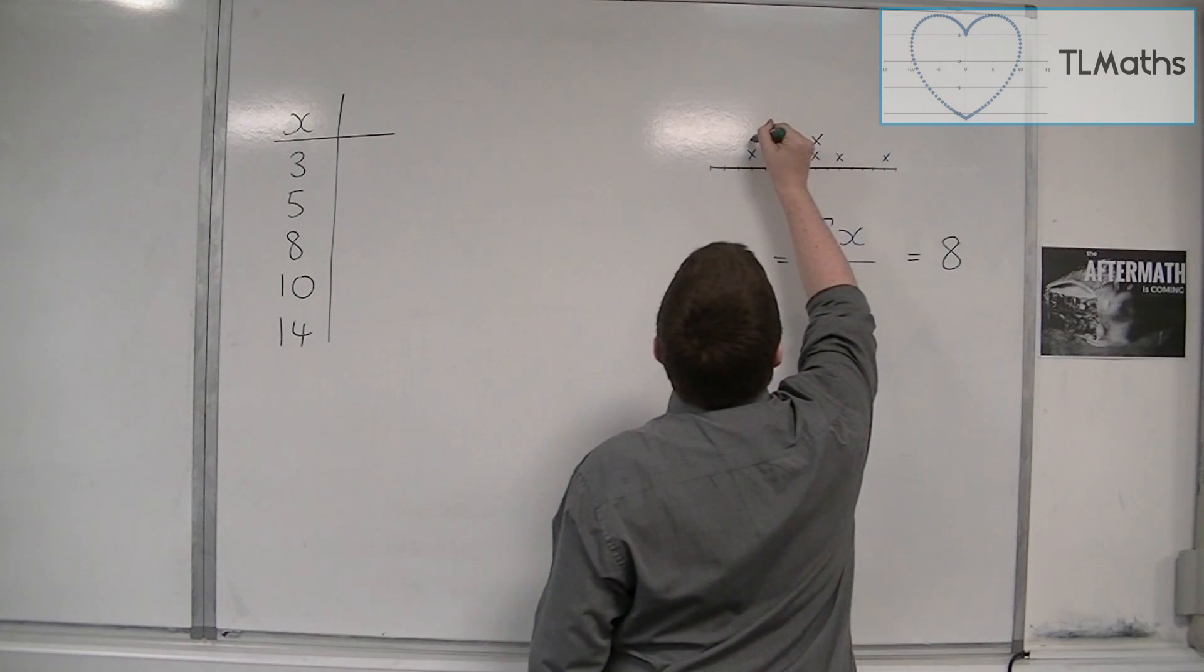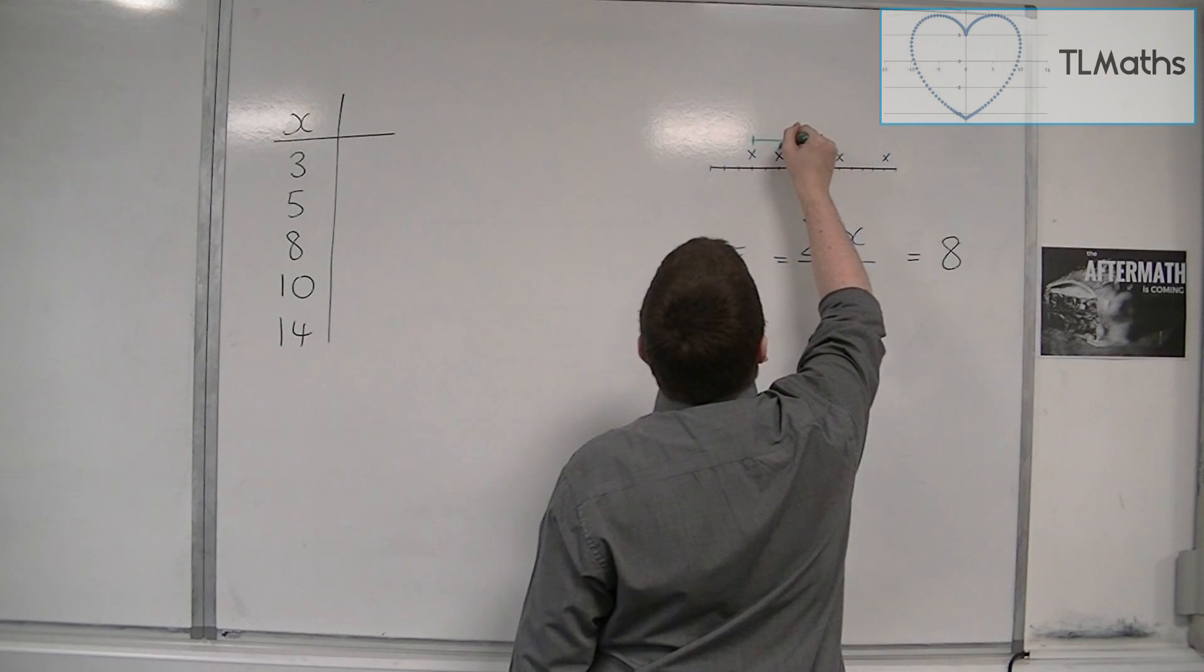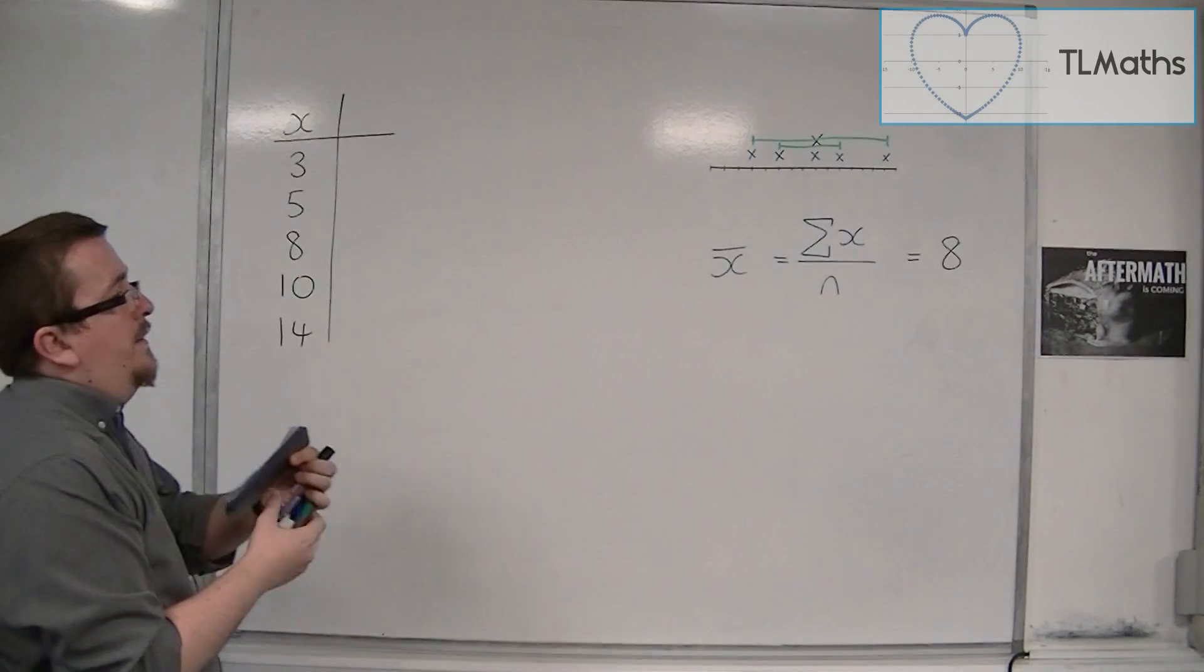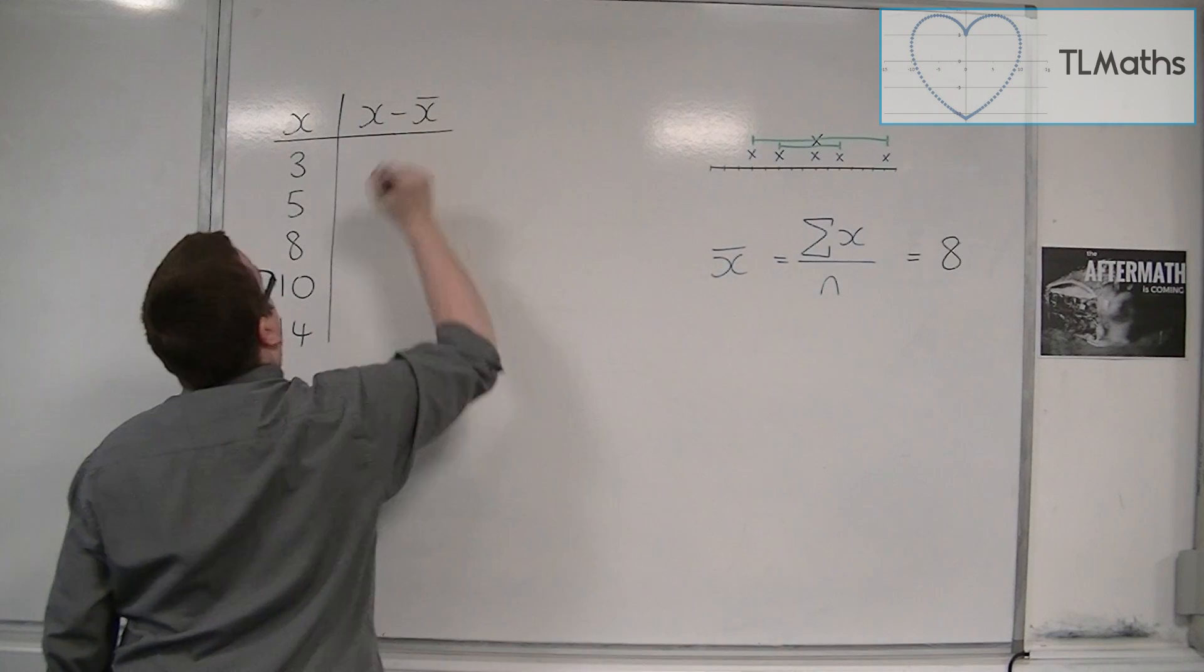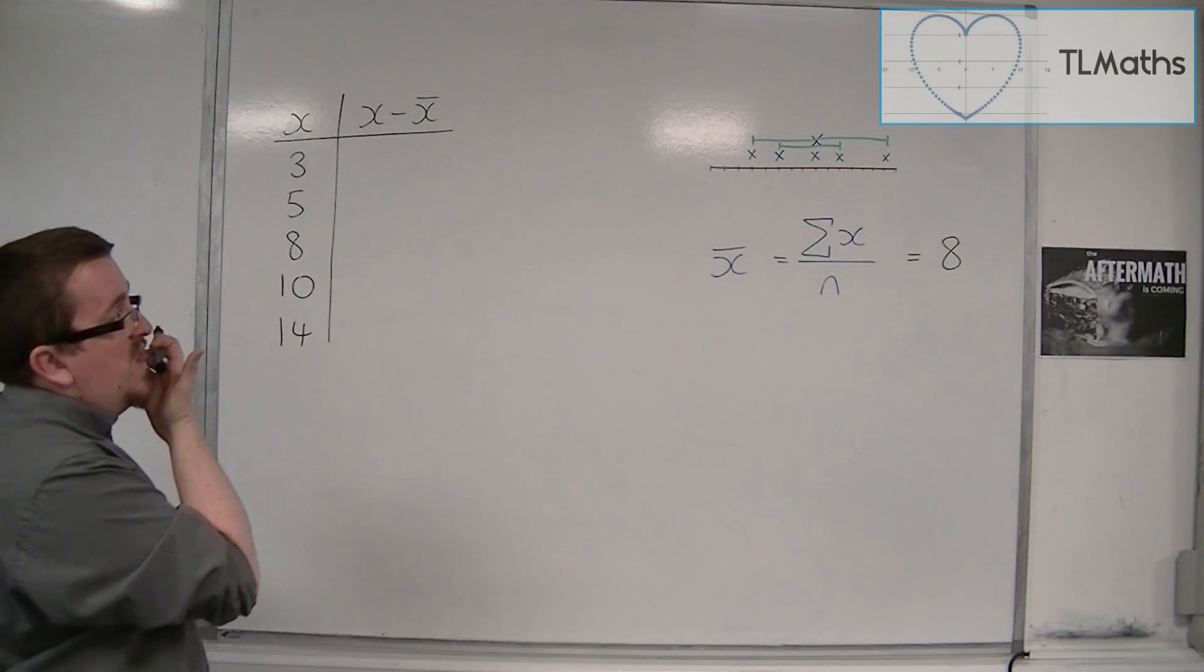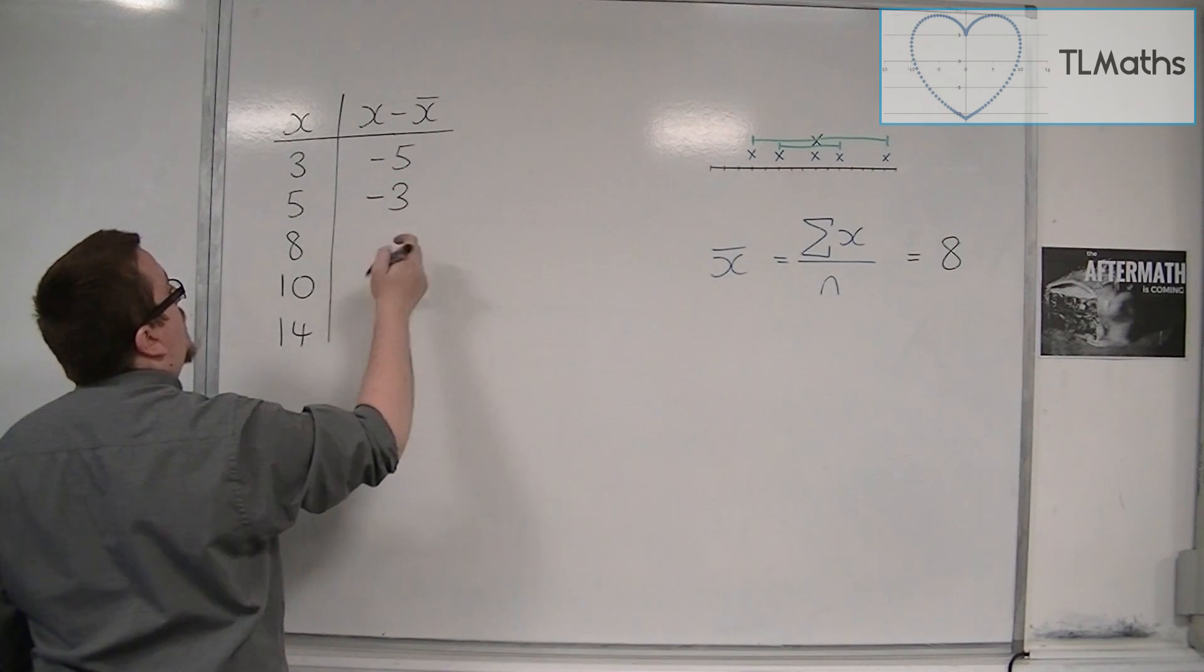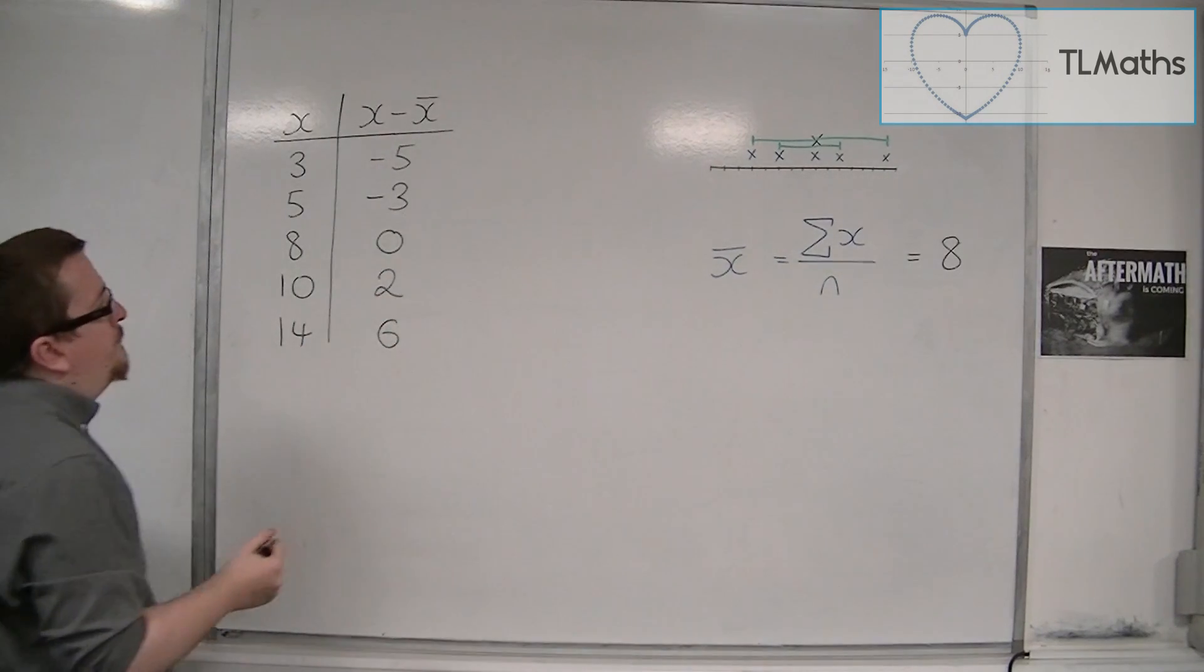So I want to look at this distance, and that distance, and this distance, and this distance. So it would make sense to get each of the data points and then take the mean from each one. So x take away x̄ will give me a valid distance. x̄ was 8. So 3 take away 8, that's minus 5. 5 take away 8 is minus 3. 8 take away 8 is 0. 10 take away 8 is 2. And 14 take away 8 is 6.